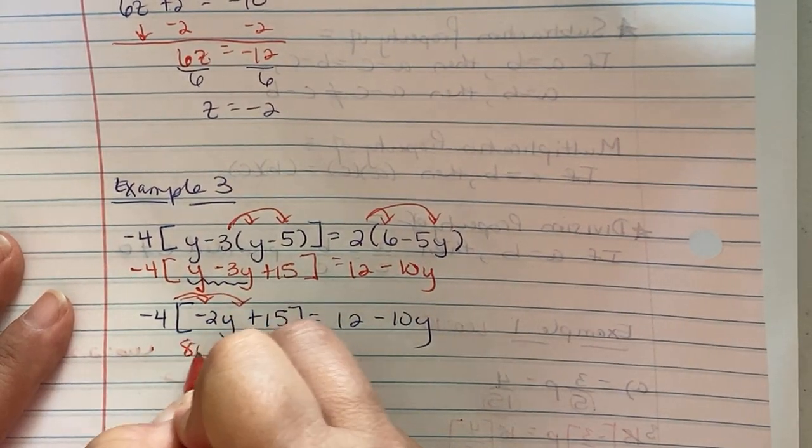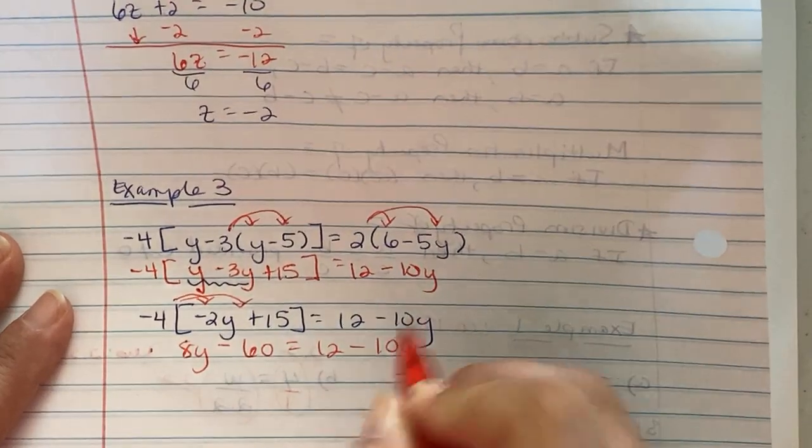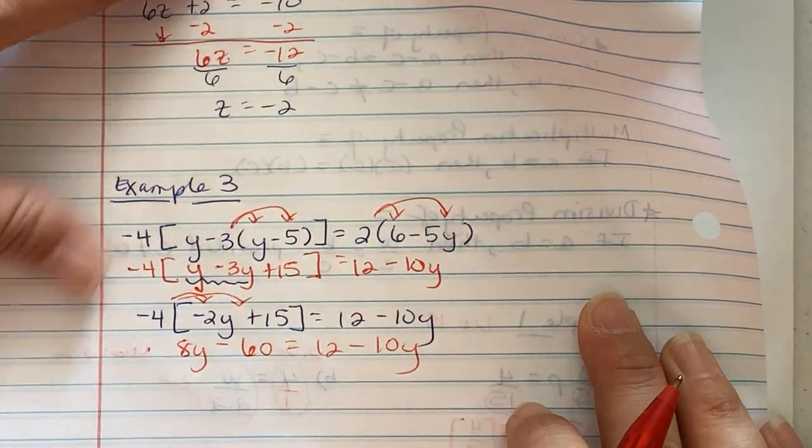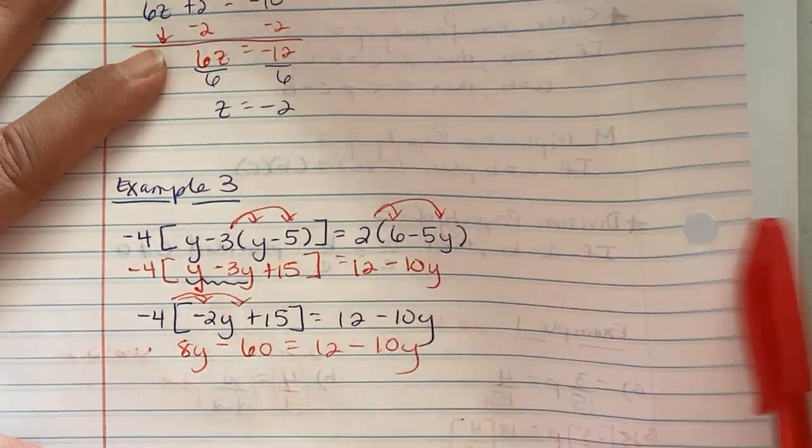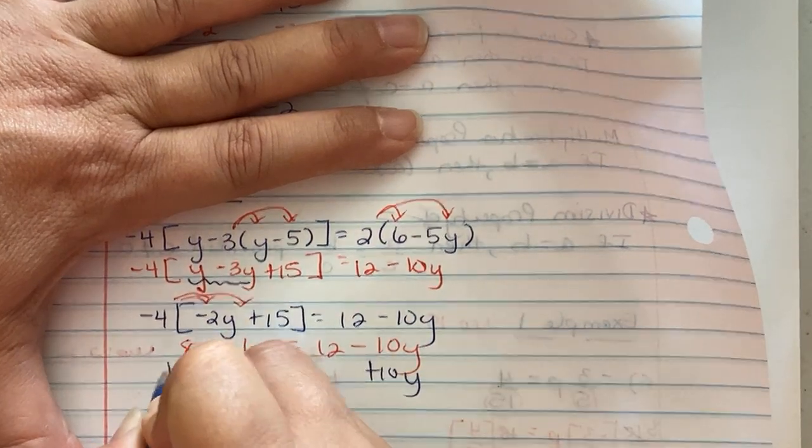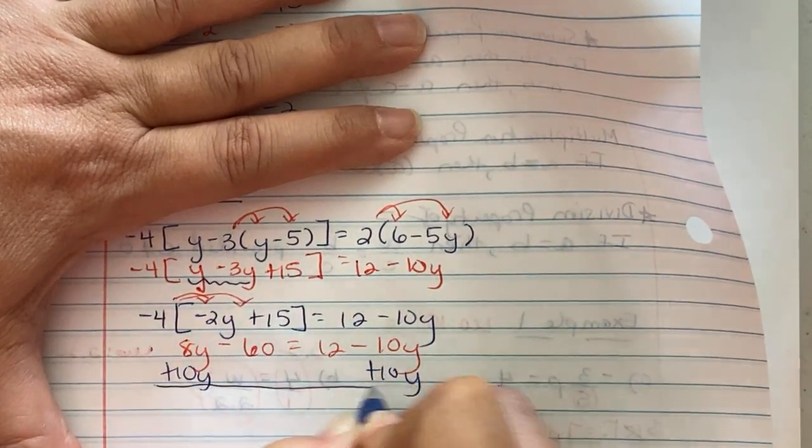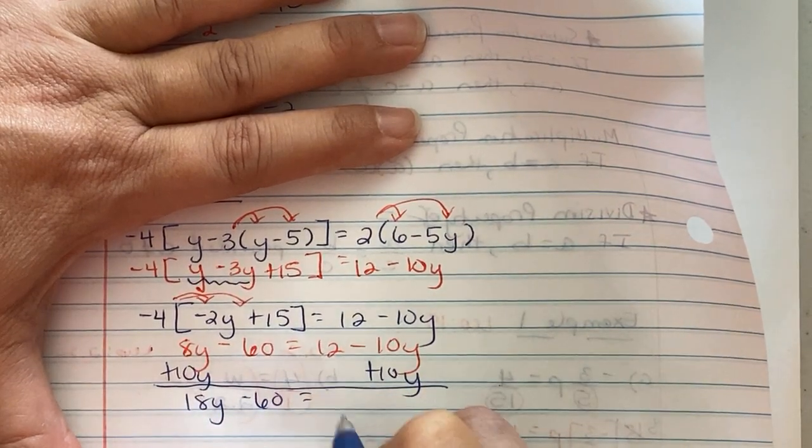So we become 8y minus 60 equals 12 minus 10y. Again, we're going to apply the rule that we did in example two. Combine like terms to the left. So it's a negative 10y, I'm going to add a 10y to get 18y minus 60 equals 12.